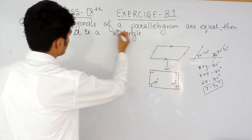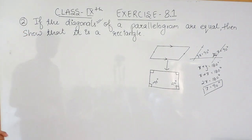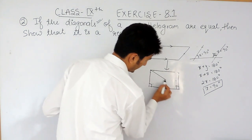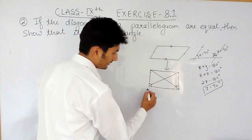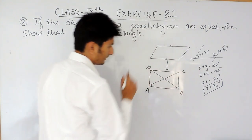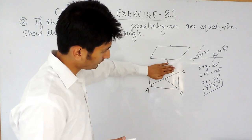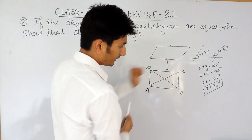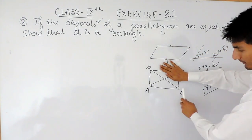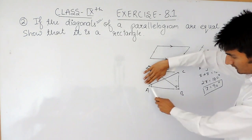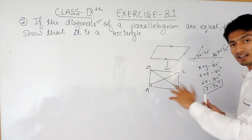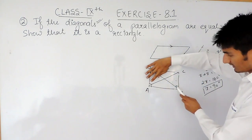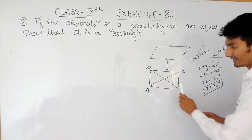Now, how do we prove that these two angles are equal? For that, we use the property that the diagonals of this parallelogram are equal. If I name the vertices A, B, C, D, then we need to prove that triangle ABD is congruent to triangle ABC. If these two triangles are congruent, then by CPCT, angle A of triangle ABD will be equal to angle B of triangle ABC — and that is how we prove angle A and angle B are equal.